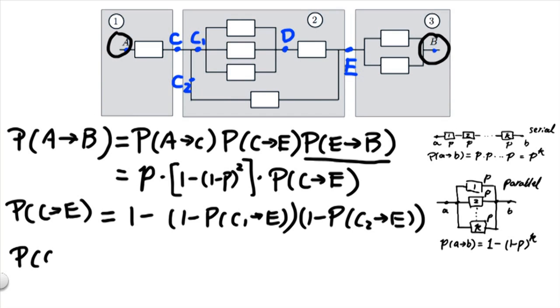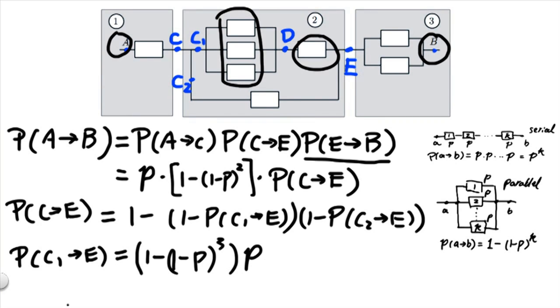Now P(C1→E) is another serial connection of these three elements here with another component. So the first three elements are connected in parallel, and we know the probability of that being successful is (1-P)³. And the last one is P. And finally, P(C2→E) is just a single element component with probability of success being P.